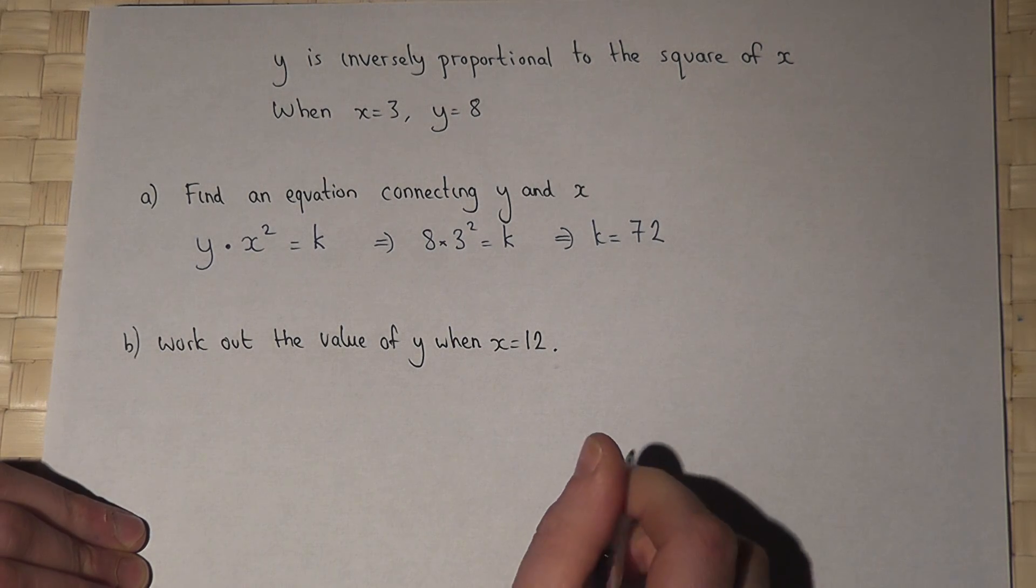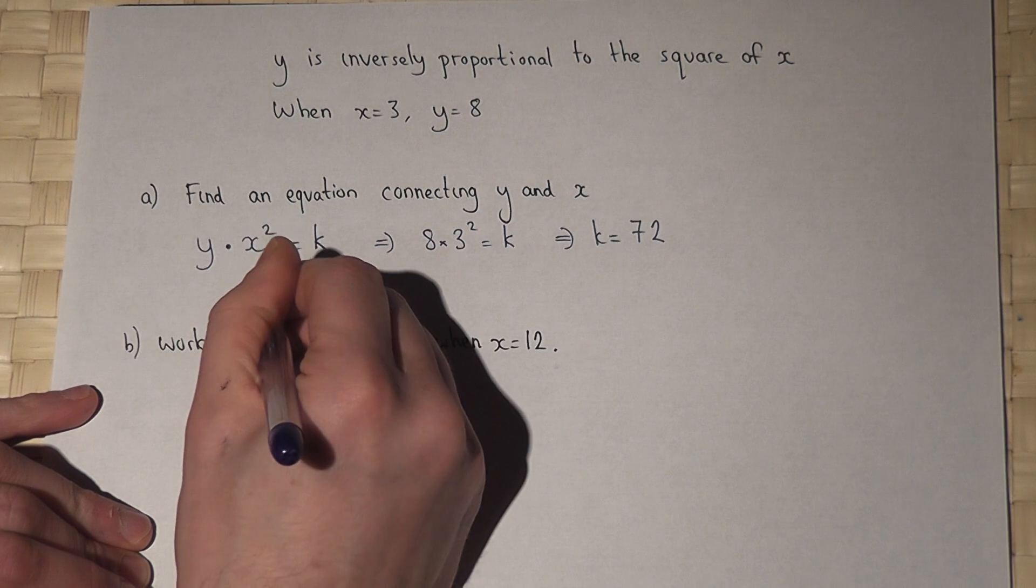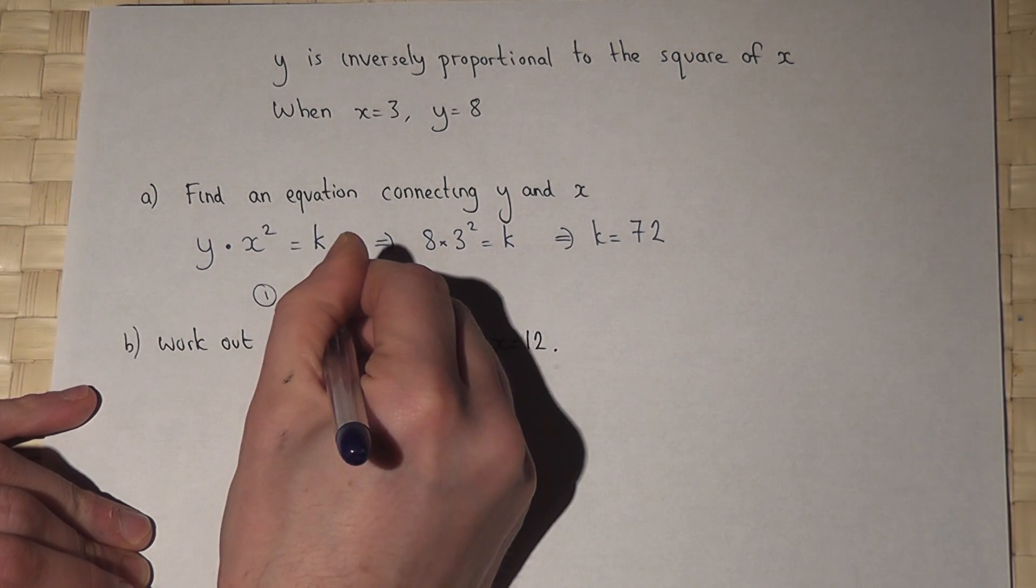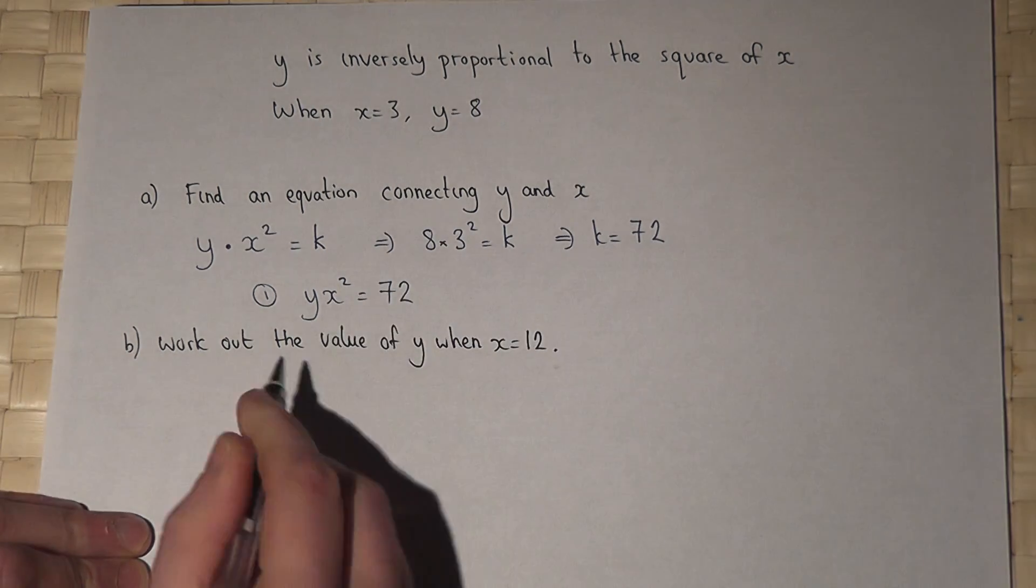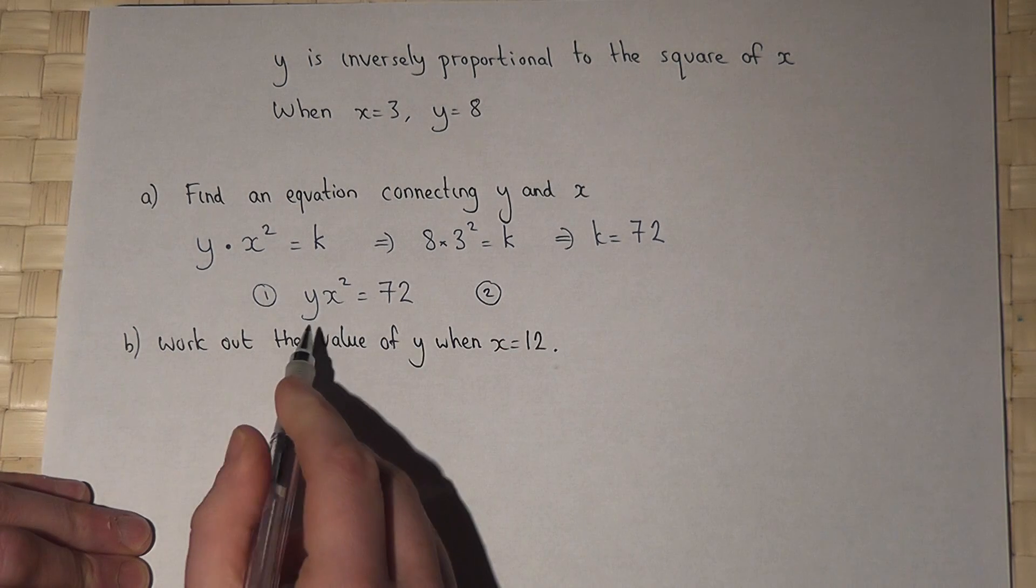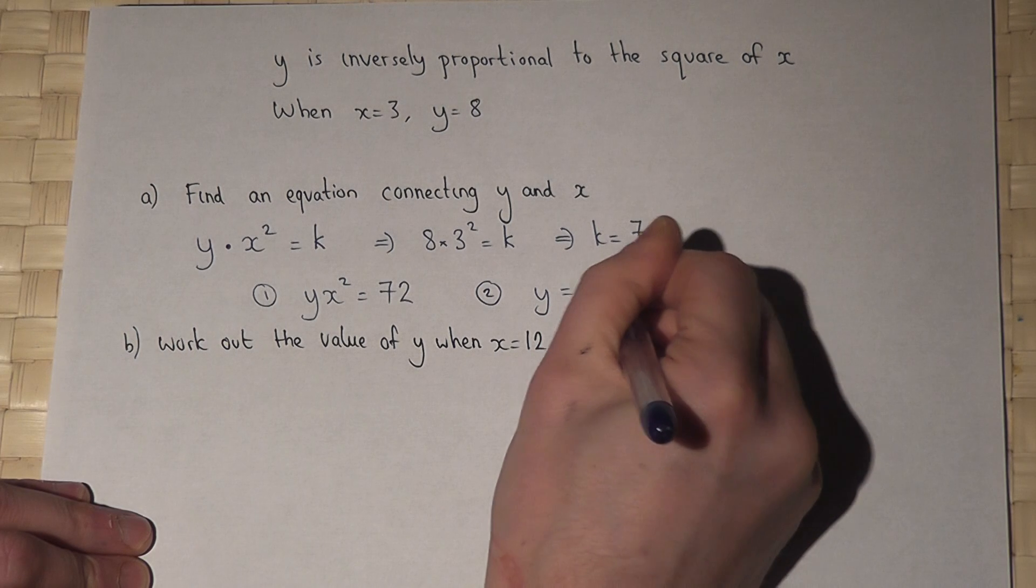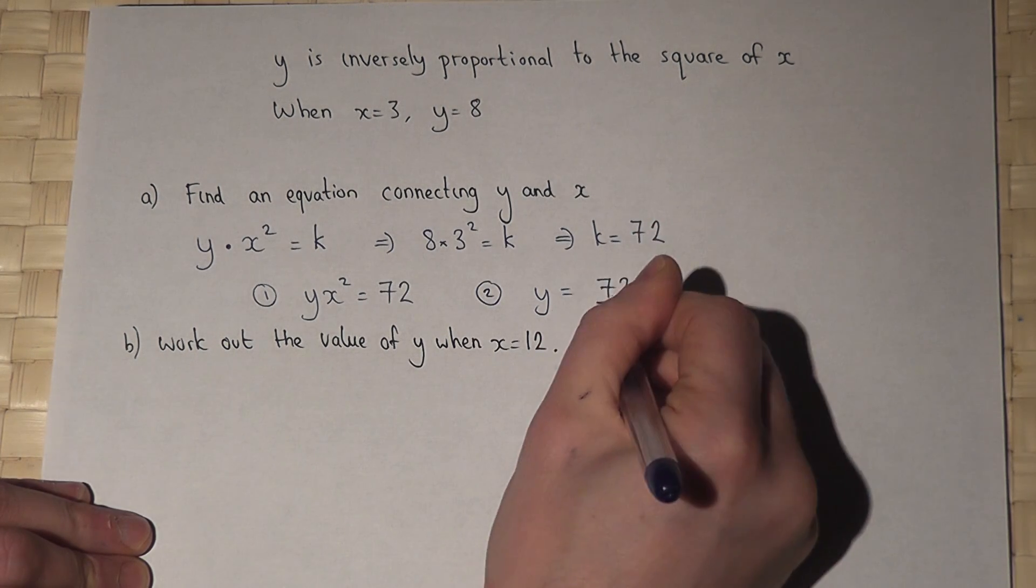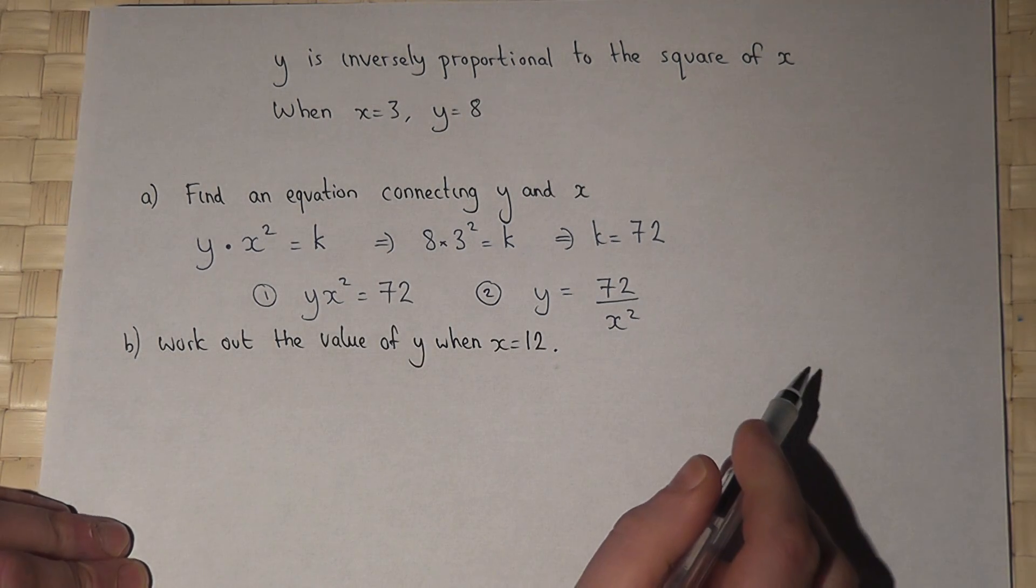This gives me an equation linking y and x. Y times x squared equals 72. That's one form of the equation. The second form could be that y equals, if I divide by x squared, 72 over x squared. Either of those are valid rearrangements.